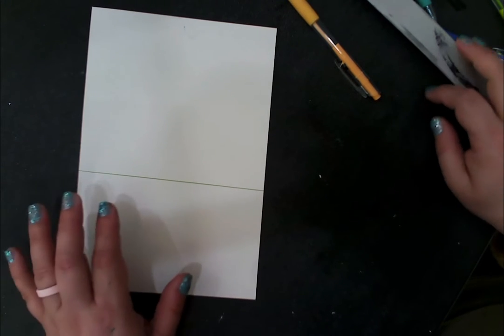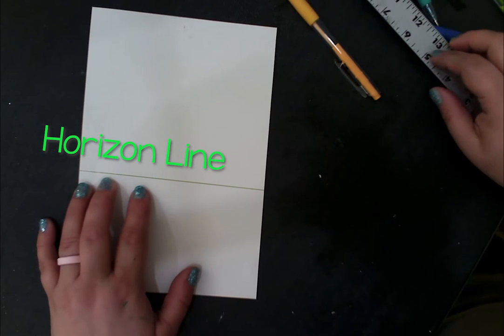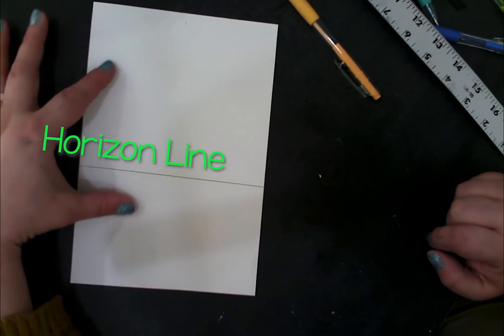For a two-point perspective, we're again going to start with a horizon line. Remember that's where the ground meets the sky.